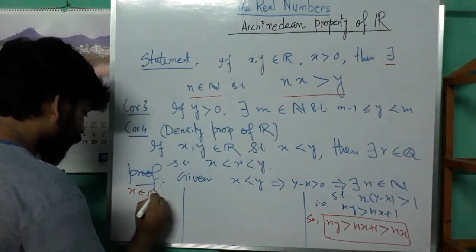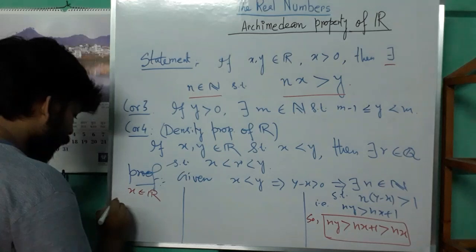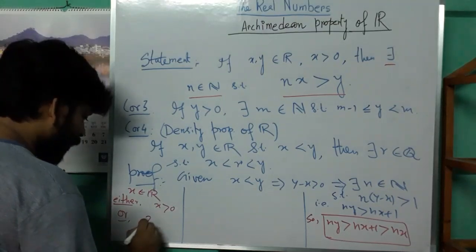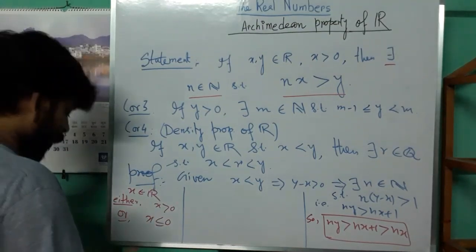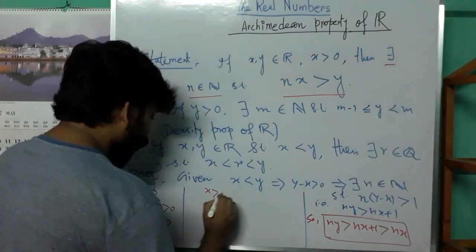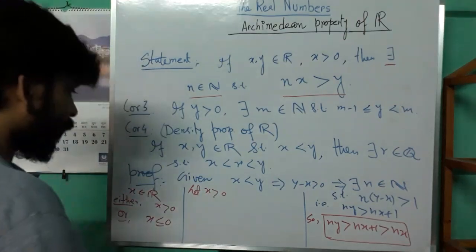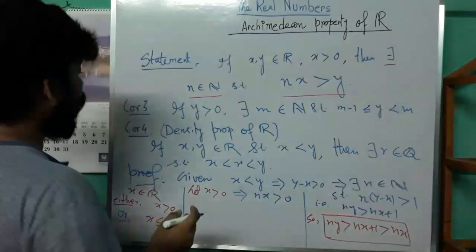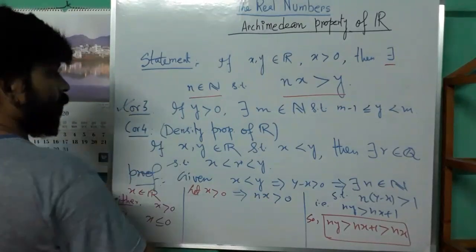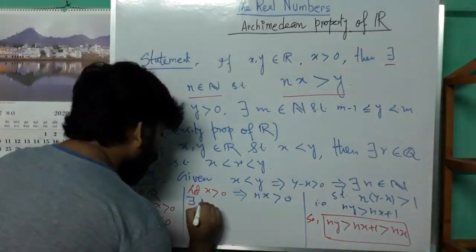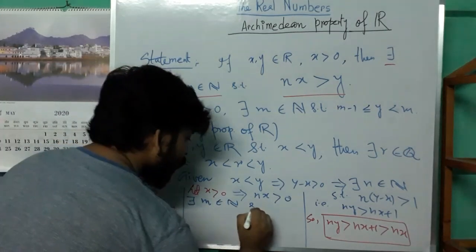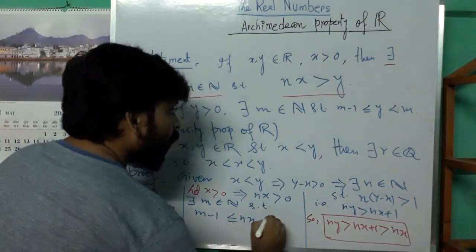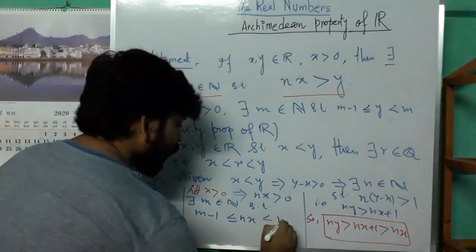Since x is a real number, by the law of trichotomy either x is strictly positive or x ≤ 0. We assume here that x is positive, so n·x is positive. By the previous result there exists a natural number m such that m−1 ≤ n·x < m.